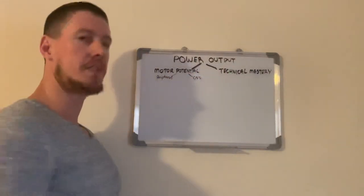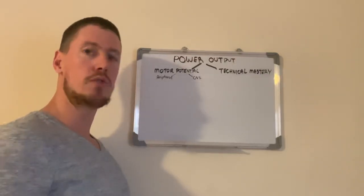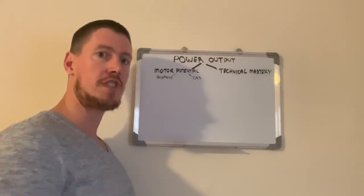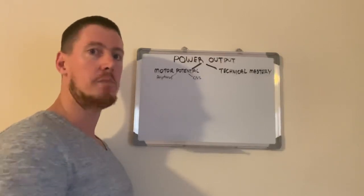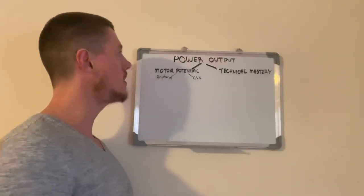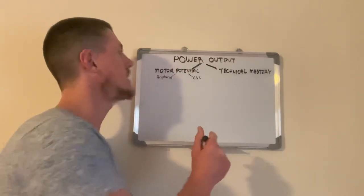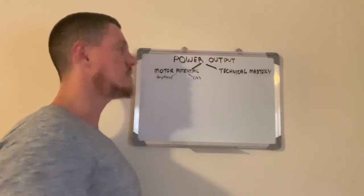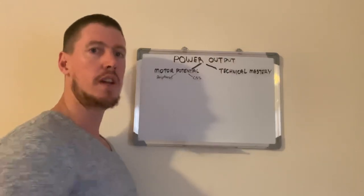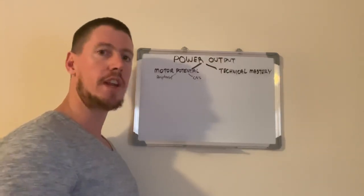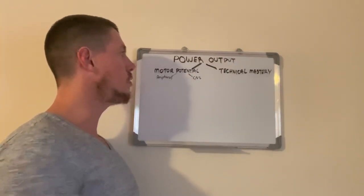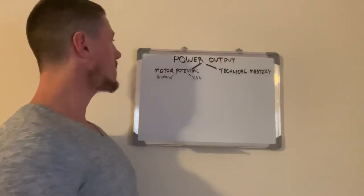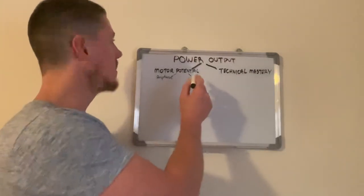Peripheral factors are things like bone strength, tendon strength, increasing cross-sectional area, and pennation angle of the muscles. CNS factors are more your intramuscular coordination, such as motor unit recruitment, rate coding, and muscle synchronisation. You've also got intermuscular coordination here.